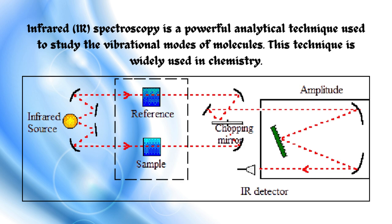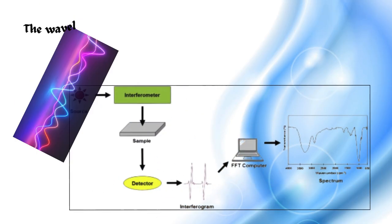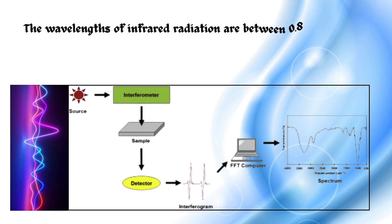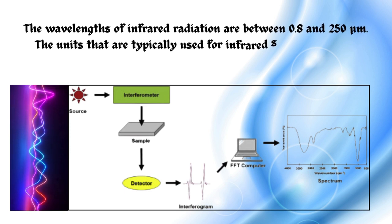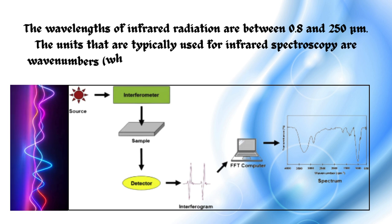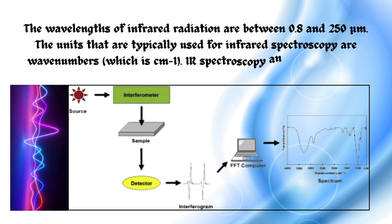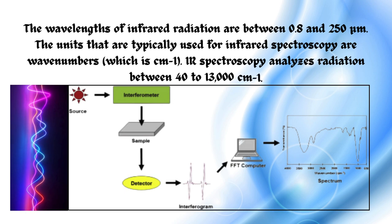This technique is widely used in chemistry. The wavelengths of infrared radiation are between 0.8 and 250 micrometers. The units that are typically used for infrared spectroscopy are wave numbers, which is per centimeter. IR spectroscopy analyzes radiation between 40 to 13,000 per centimeter.